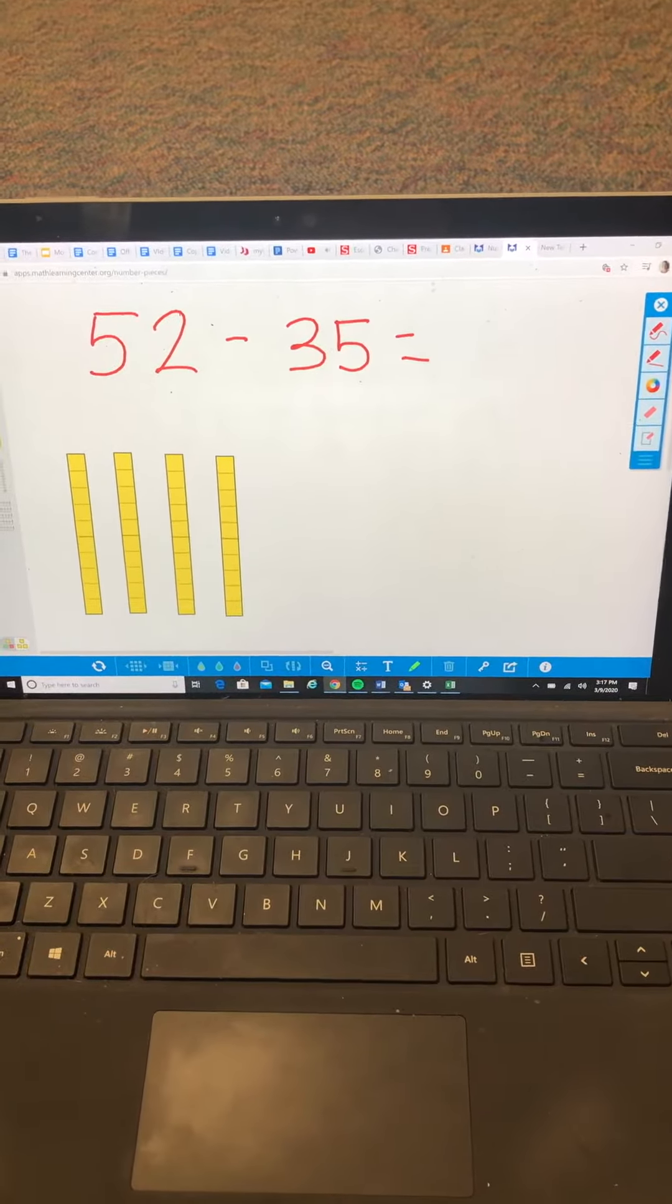So what we're trying to do is have them go 10, 20, 30, 31, 32, but we need to take away 35.